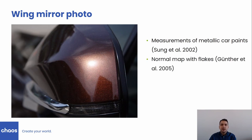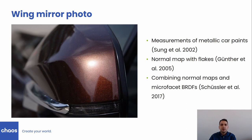Günther et al. generated randomly oriented flakes and baked them into a normal map. This aspect is similar to our work; however, they assume that the flakes are perfectly specular. Our work is also similar to the microfacet model of Schussler et al. that combines normal maps and microfacet BRDFs. However, the methods of Günther and Schussler do not include filtering, which could lead to severe flickering in animation.